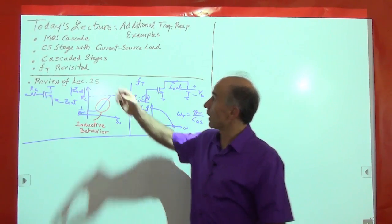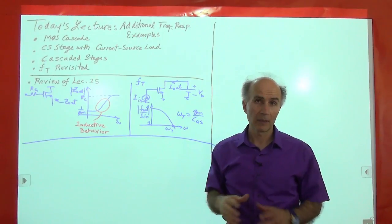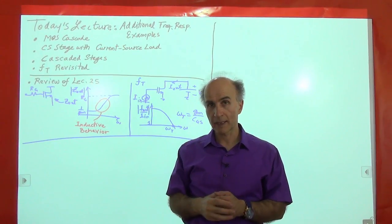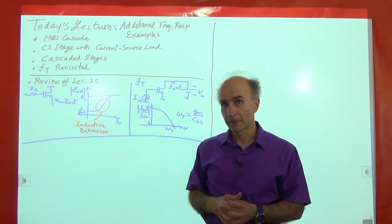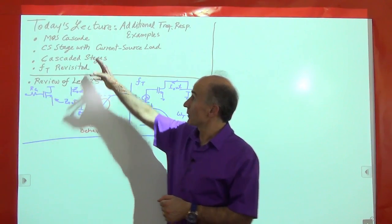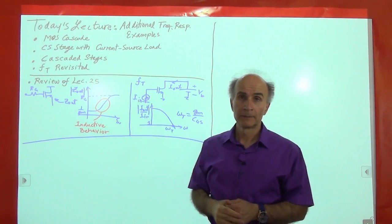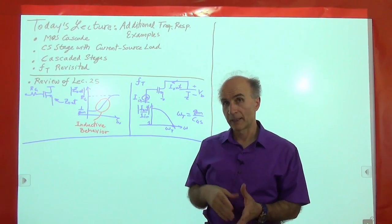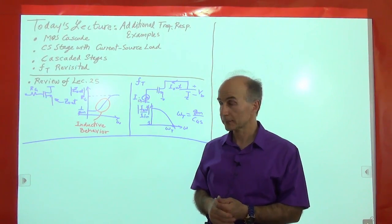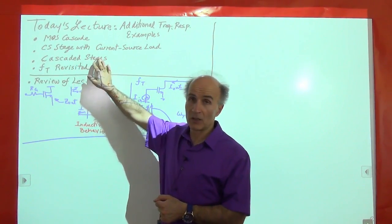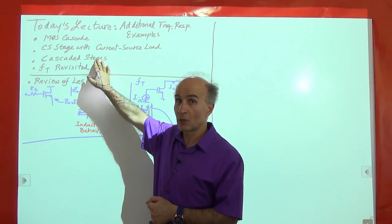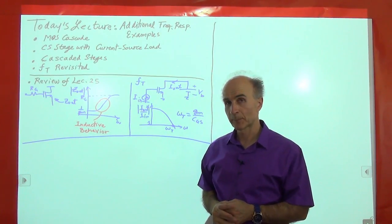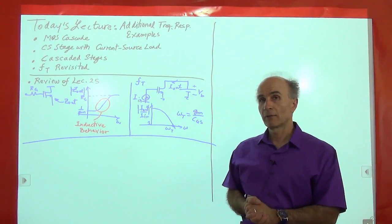We're going to start with the MOS cascode. I mentioned that last time in the context of the bipolar cascode, and they are similar, so we might as well go over the MOS cascode and analyze its response. Then we will go to a common source stage with current source load — something we have seen in Electronics 1 at low frequencies, but now we want to study its high frequency behavior. Then we'll talk about cascaded stages, which should not be confused with cascode stages. And finally, we will revisit the concept of FT, which will conclude our study of frequency response.